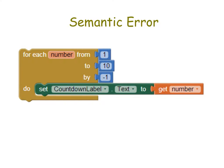The way you would fix this bug would be to change the 'from' to 10 and the 'to' to 1, so that it goes 10, 9, 8, 7, 6, 5, 4, 3, 2, 1.